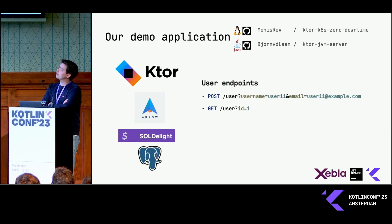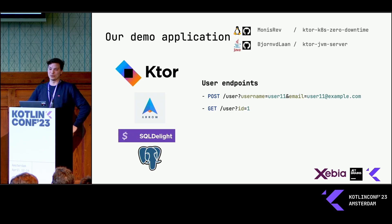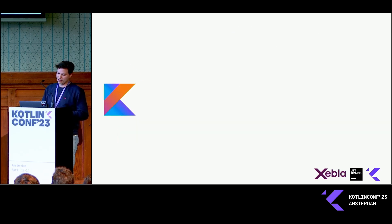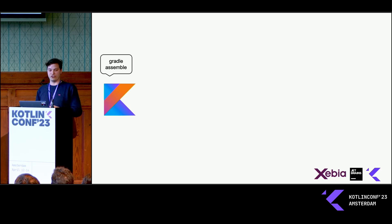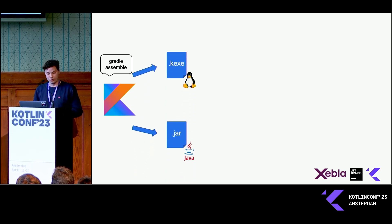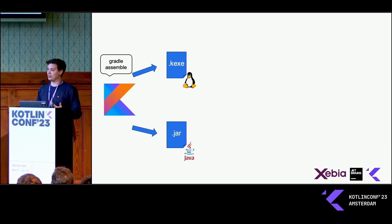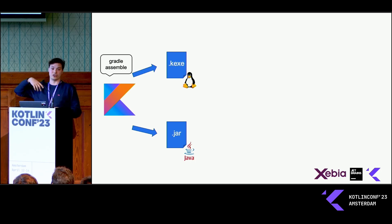The application itself is actually pretty simple. It has two routes about our favorite example, the user. It has a POST route where you can create a new user — with a username and an email — and you can also GET a user by its ID. For both repositories, we call Gradle to make a compiled file: for the JVM, it's a JAR, and for Linux, it's a KXI file. I wasn't familiar with this extension, but it's related to the EXE file you might know from Windows.